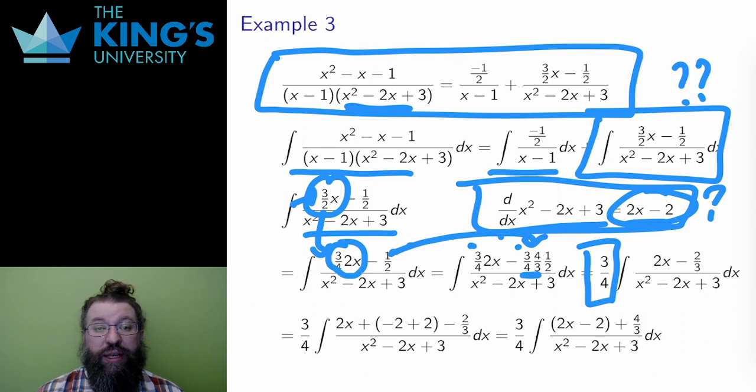The second term that remains is negative 4 thirds times 1 half, which simplifies to negative 2 thirds. All right, now I've done half the work. The first part of the numerator is 2x, which matches the derivative that I want. But now I need 2x minus 2. How do I get the negative 2 piece?